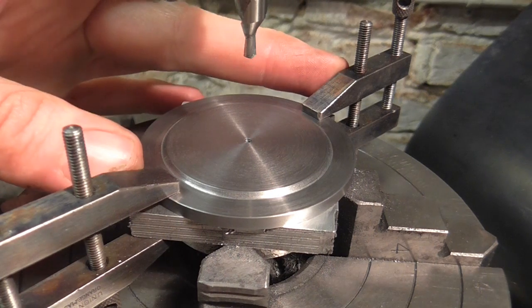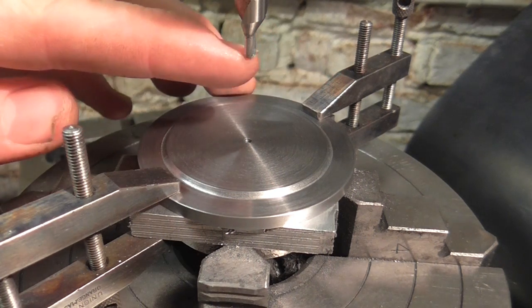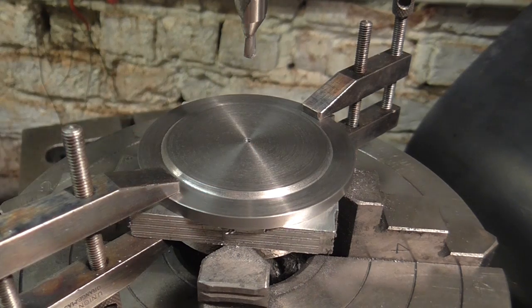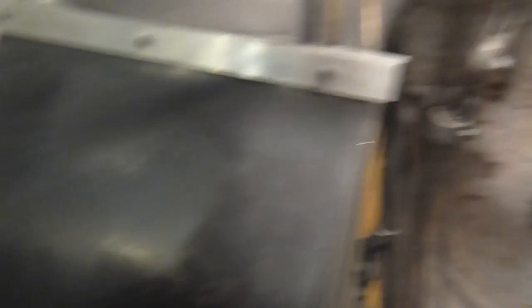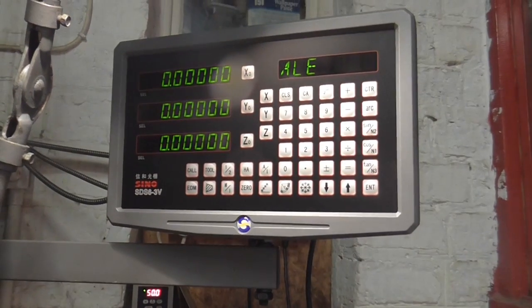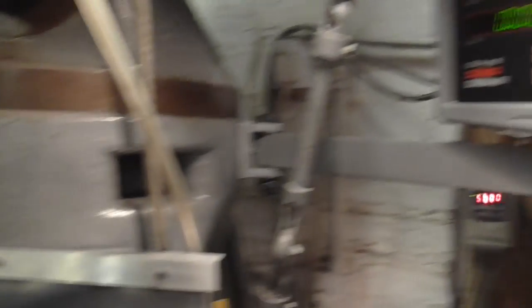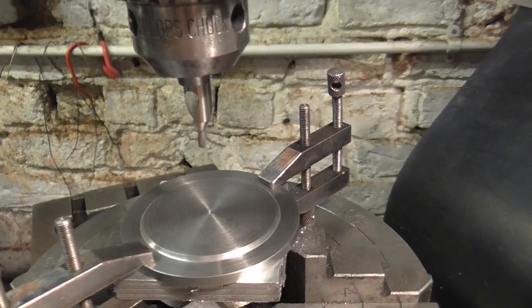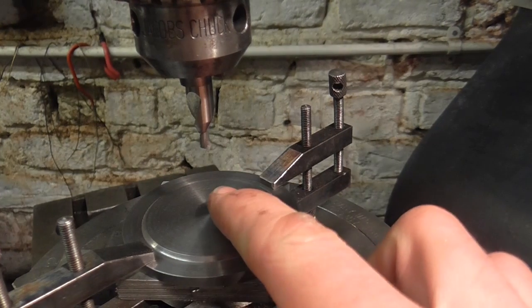The clamps are in position, and in part two I found the center of the fixture, and that is where I am now. If we look up at the digital readout, you can see 0,0 for X and Y, so I know that the center drill is right above the middle.